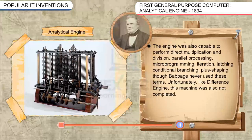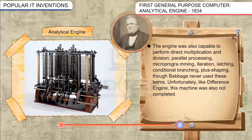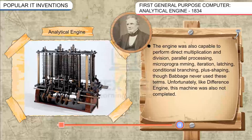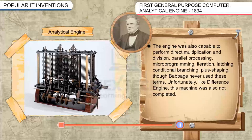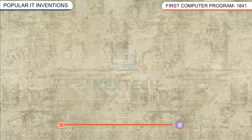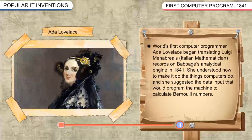The Analytical Engine was also capable of performing direct multiplication and division, parallel processing, microprogramming, iteration, latching, conditional branching, and loop shaping — though Babbage never used these terms. Unfortunately, like the Difference Engine, this machine was also never completed.